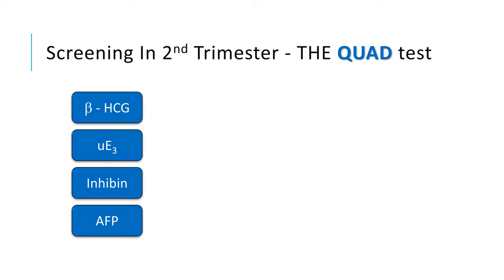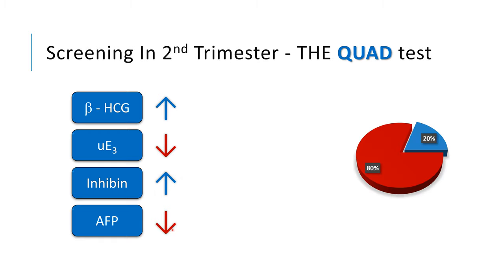In the second trimester, we do the quad test — four tests: beta-hCG, unconjugated estriol, inhibin, and alpha-fetoprotein, all from maternal serum. In Down syndrome, there is usually increased beta-hCG and inhibin, and decreased estriol and alpha-fetoprotein. These parameters can detect almost 80% of cases of Down syndrome in the second trimester.